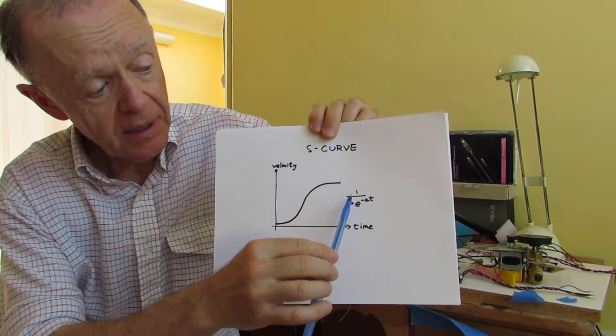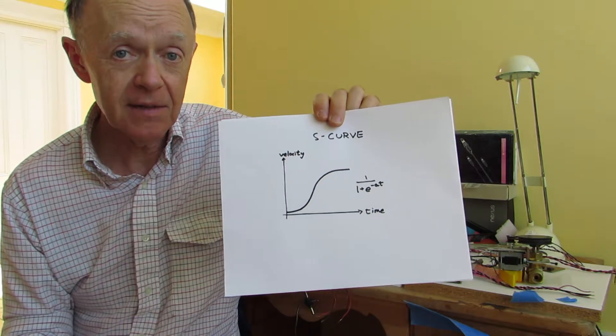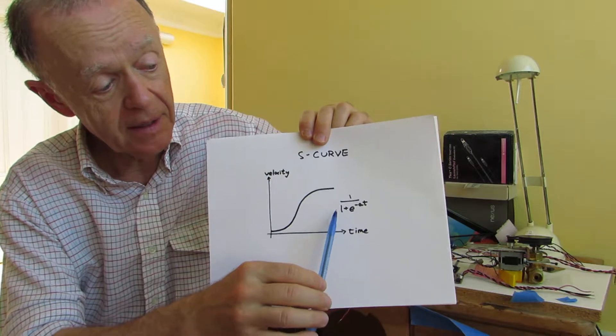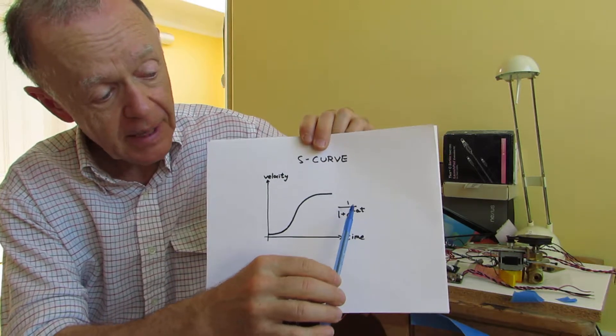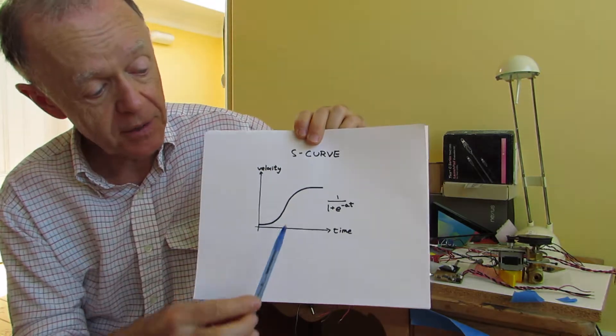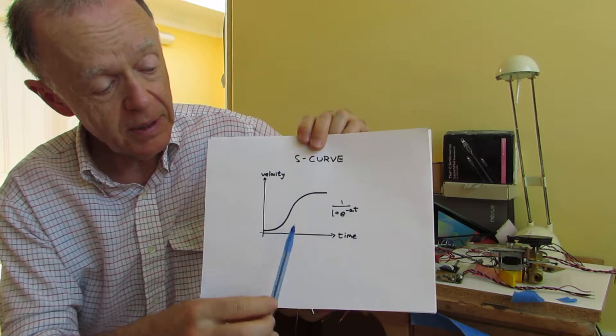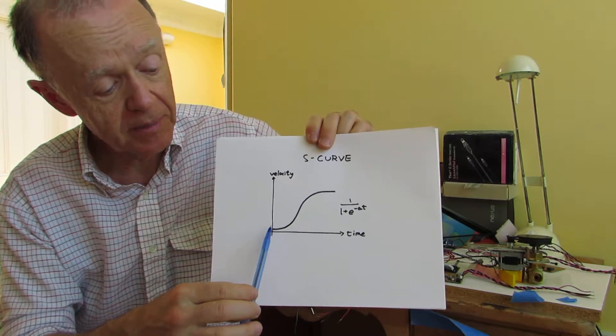The equation is 1 over 1 plus e to the minus at, and the Cortex doesn't actually have an arithmetic logic unit on it. So calculating an exponential is very expensive in software, so we actually use a lookup table. We digitize this ahead of time so we can look it up.